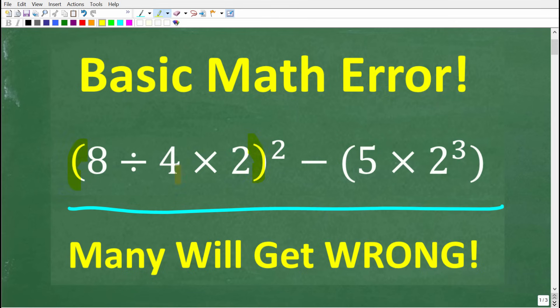We have parentheses, and inside the parentheses we have 8 divided by 4 times 2 squared. Now that's going to be a minus. We have parentheses over here, 5 times 2 to the third power, or 2 cubed. All right, so here is the question.